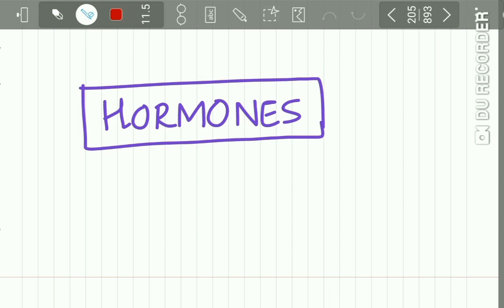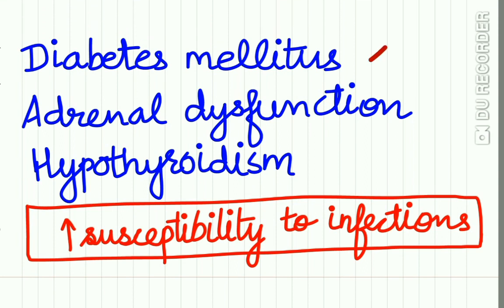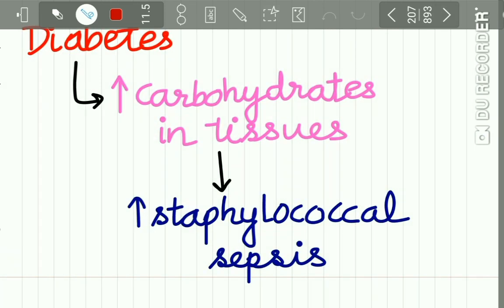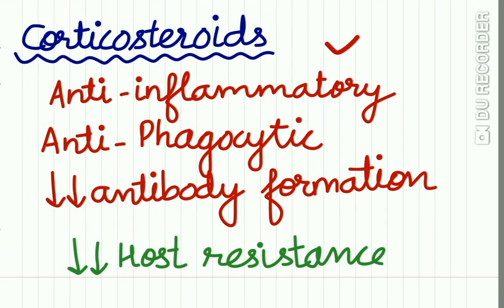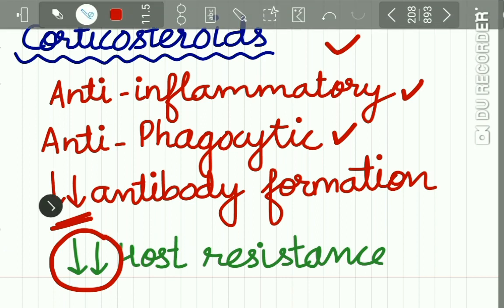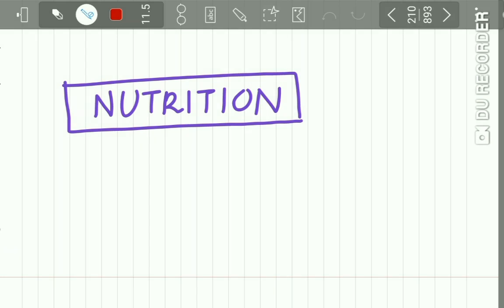The second factor modifying innate immunity is hormones. Hormonal conditions such as diabetes mellitus, adrenal dysfunction, and hypothyroidism are conditions with increased susceptibility to infection. In diabetes, increased carbohydrates in the tissue increases the staphylococcal sepsis level. Corticosteroids have anti-inflammatory, anti-phagocytic properties and reduce antibody formation, so intake of corticosteroids reduces host resistance. Pregnancy is also a condition with increased steroid levels, which increases the susceptibility to infection.